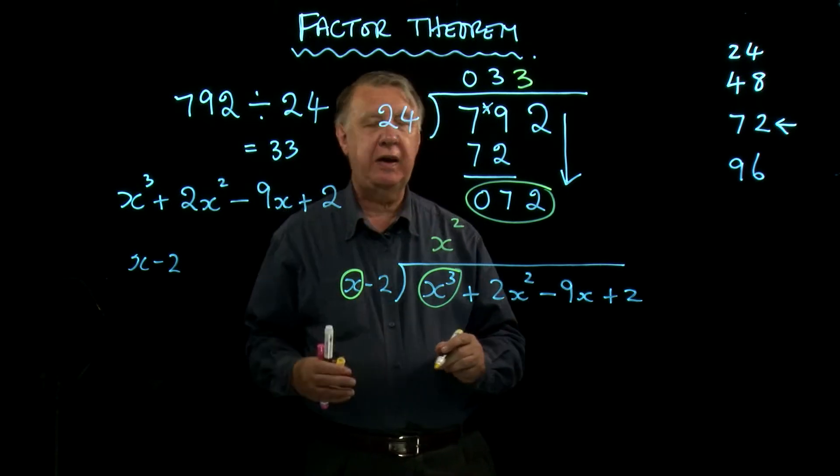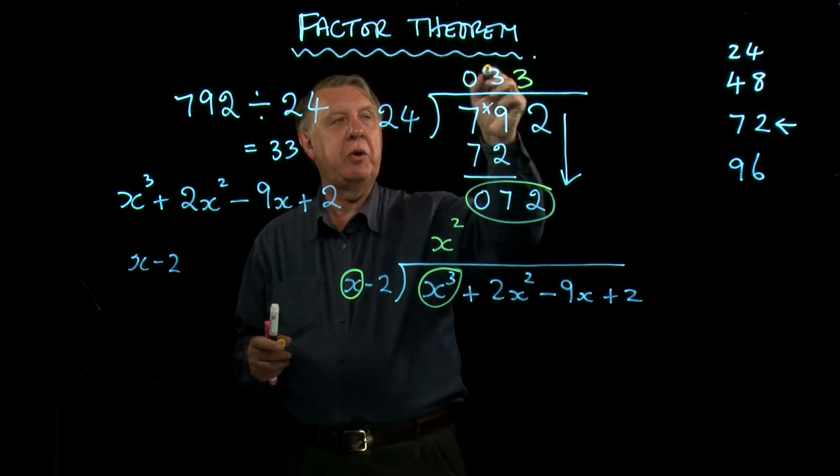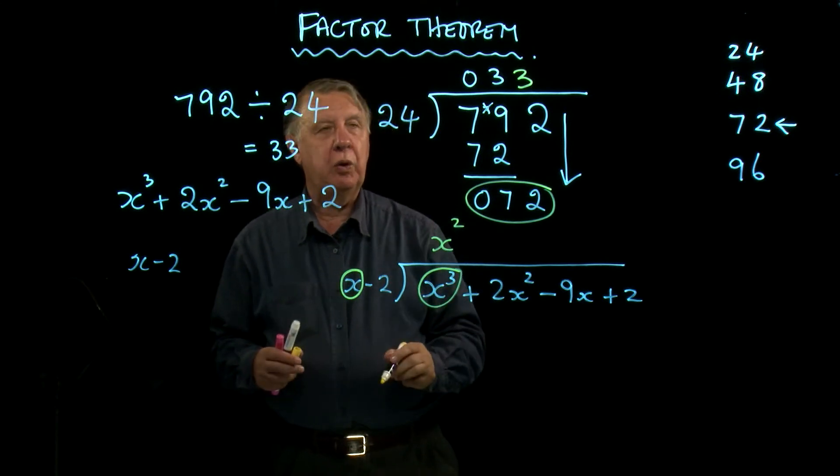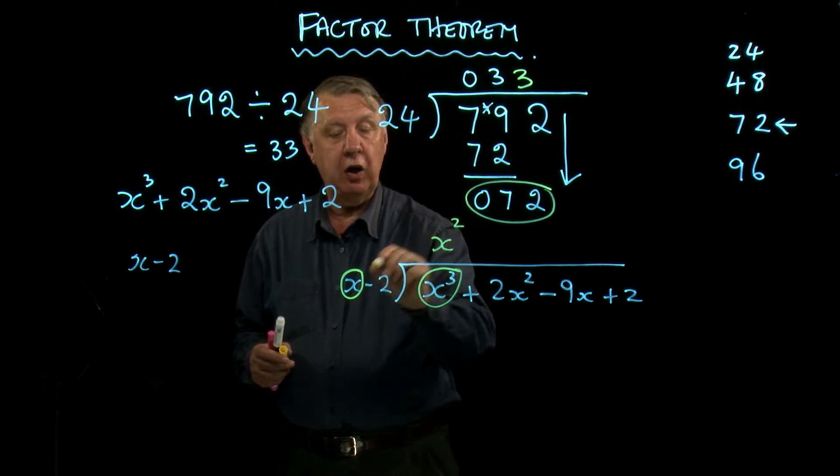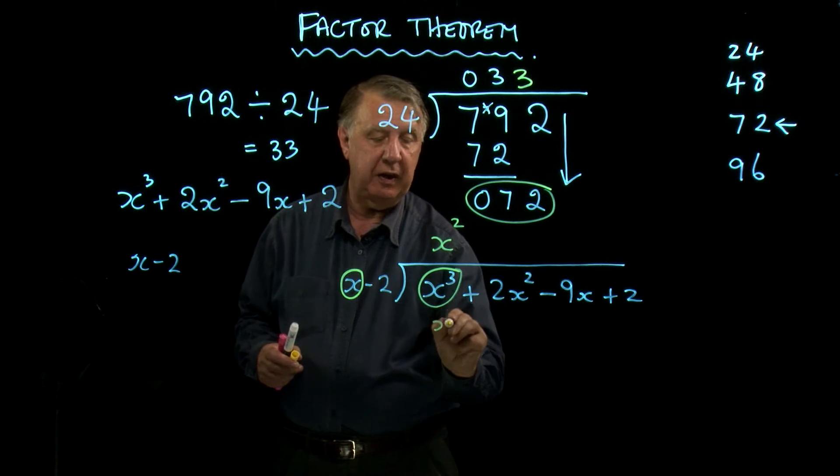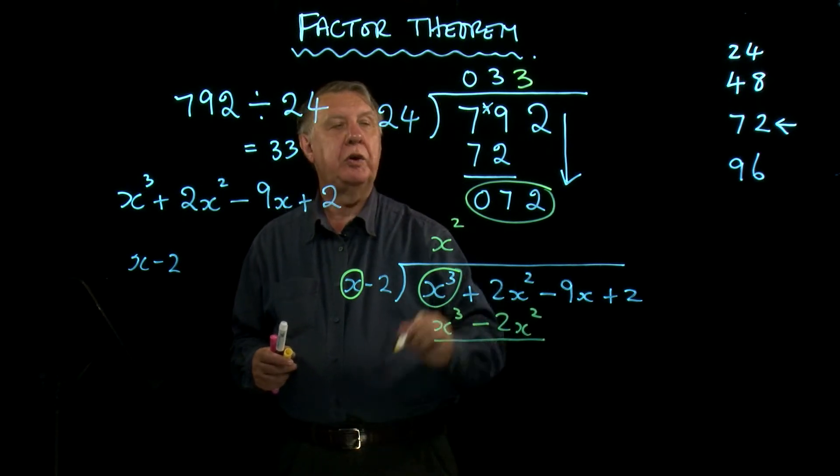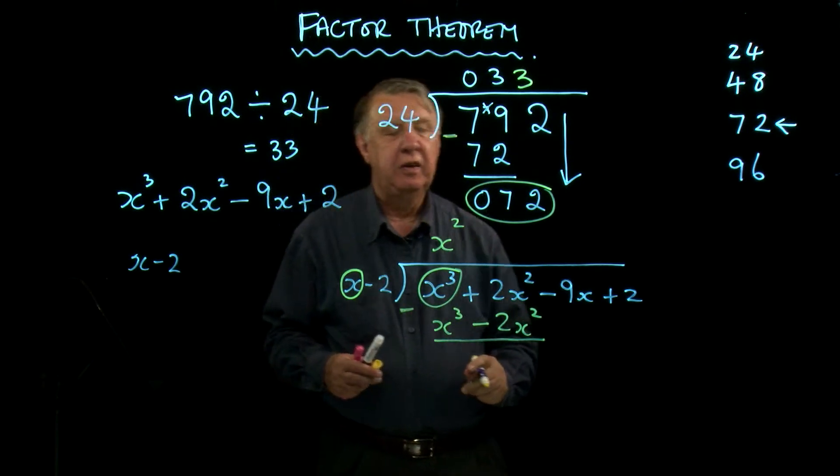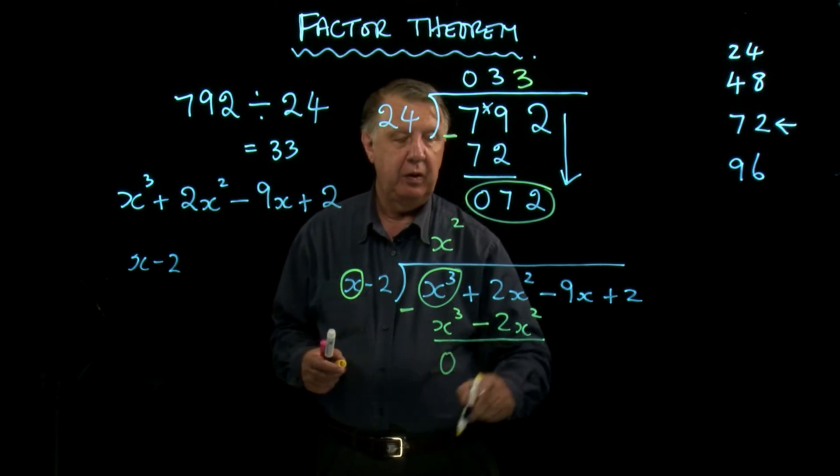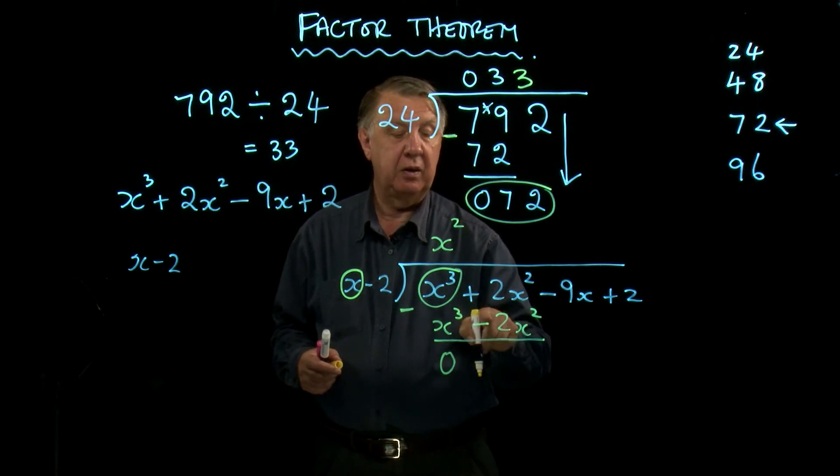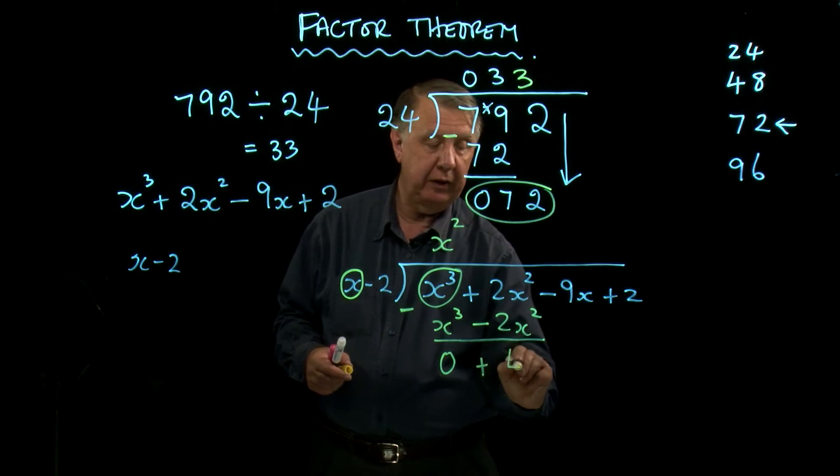Because x times x² is x³. Now remember what we did up here? We then multiplied that by that and we put this underneath. So when I do the multiplying, I do the whole lot here by x². So x² times x is x³. x² times -2 is -2x². What did I then do? I subtracted. So x³ take away x³ is nothing. 2x² take away negative 2x² - how do I take away negative 2x²? I add it. 2x² add 2x² is 4x².